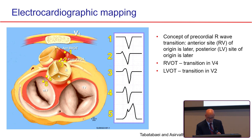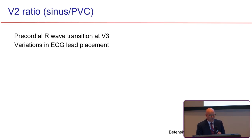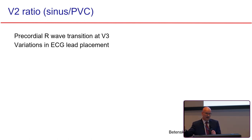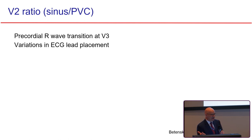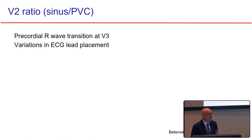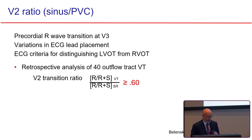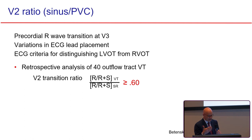If you're more posterior, you have more forces in the precordial leads. We had a paper that looked at PVCs with a precordial R-wave transition in V3—not as late as RV outflow tract and not as early as LV outflow tract. We also wanted to account for variations in ECG lead placement, particularly in the precordium. The question was: could you use the patient as his or her own control and compare sinus to PVC? They did a retrospective analysis of 40 outflow tract VTs looking at the transition ratio between sinus and PVCs in V2.